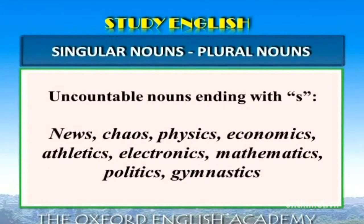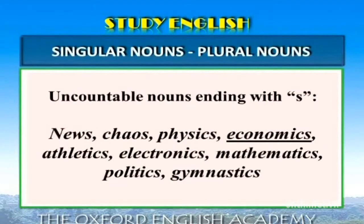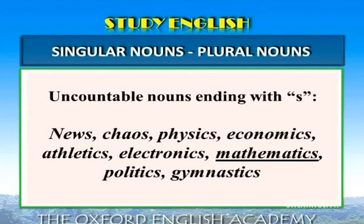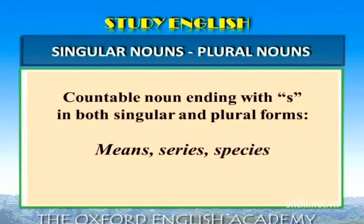Thứ hai, một số danh từ kết thúc bằng -s nhưng lại là danh từ không đếm được. Ví dụ: News, Chaos, Physics, Economics, Athletics, Electronics, Mathematics, Politics, Gymnastics. Một số danh từ khác kết thúc bằng -s, là danh từ đếm được, và có dạng thức không thay đổi cả ở số ít và số nhiều. Ví dụ: Means, Series, Species.